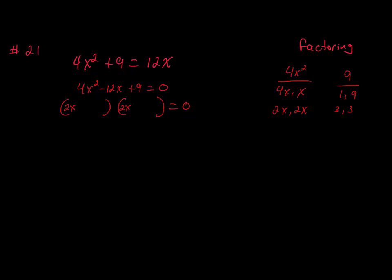Since we have a minus and a plus, that's telling me these two factors are going to be minus. Sometimes you just have to try different combinations. When you have odd numbers it's a little easier because you just have one value. When you have composite values like 4 and 9, it gets a little trickier — you can have quite a few combinations to try. We're going to multiply it out to make sure it works.